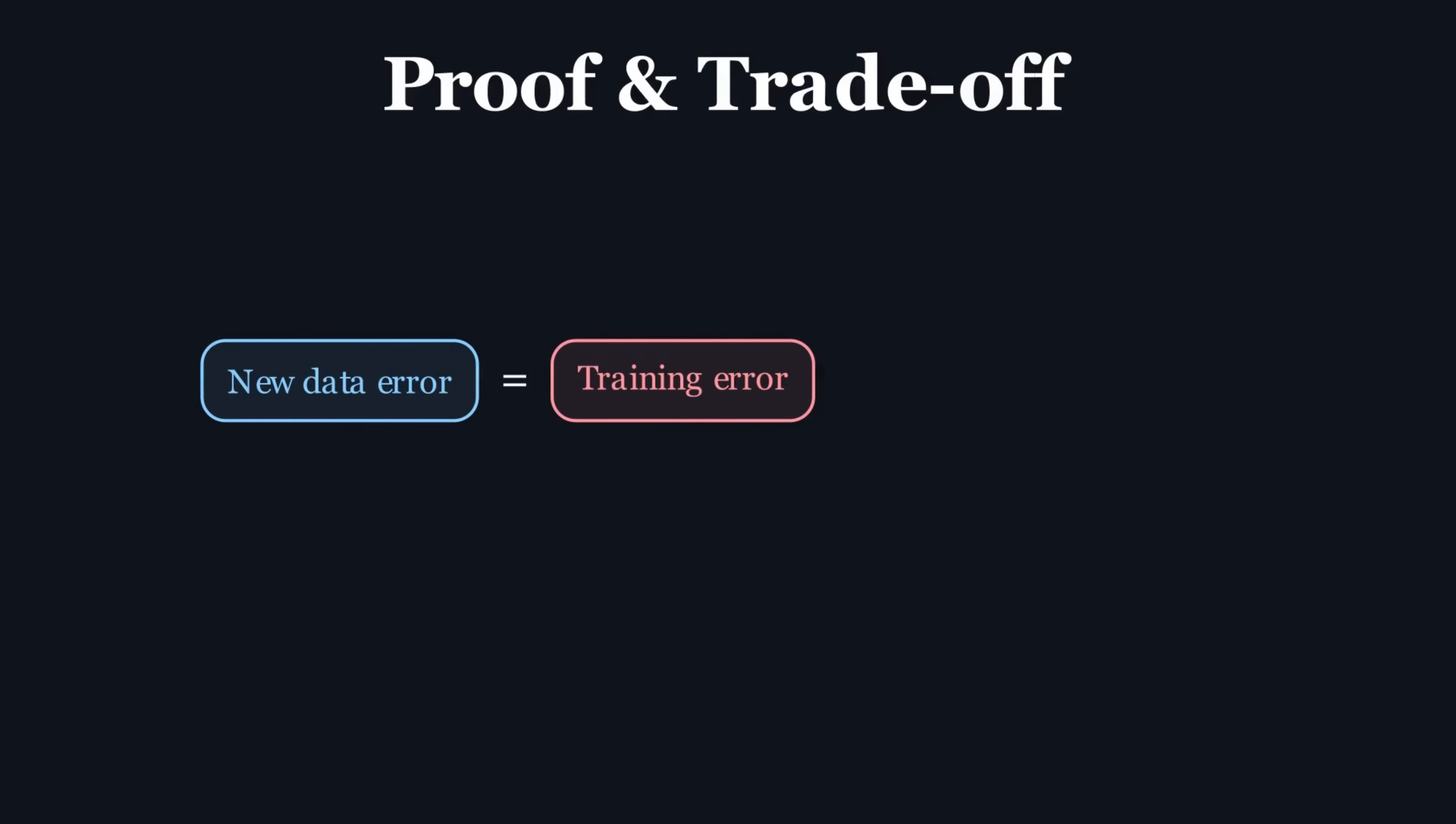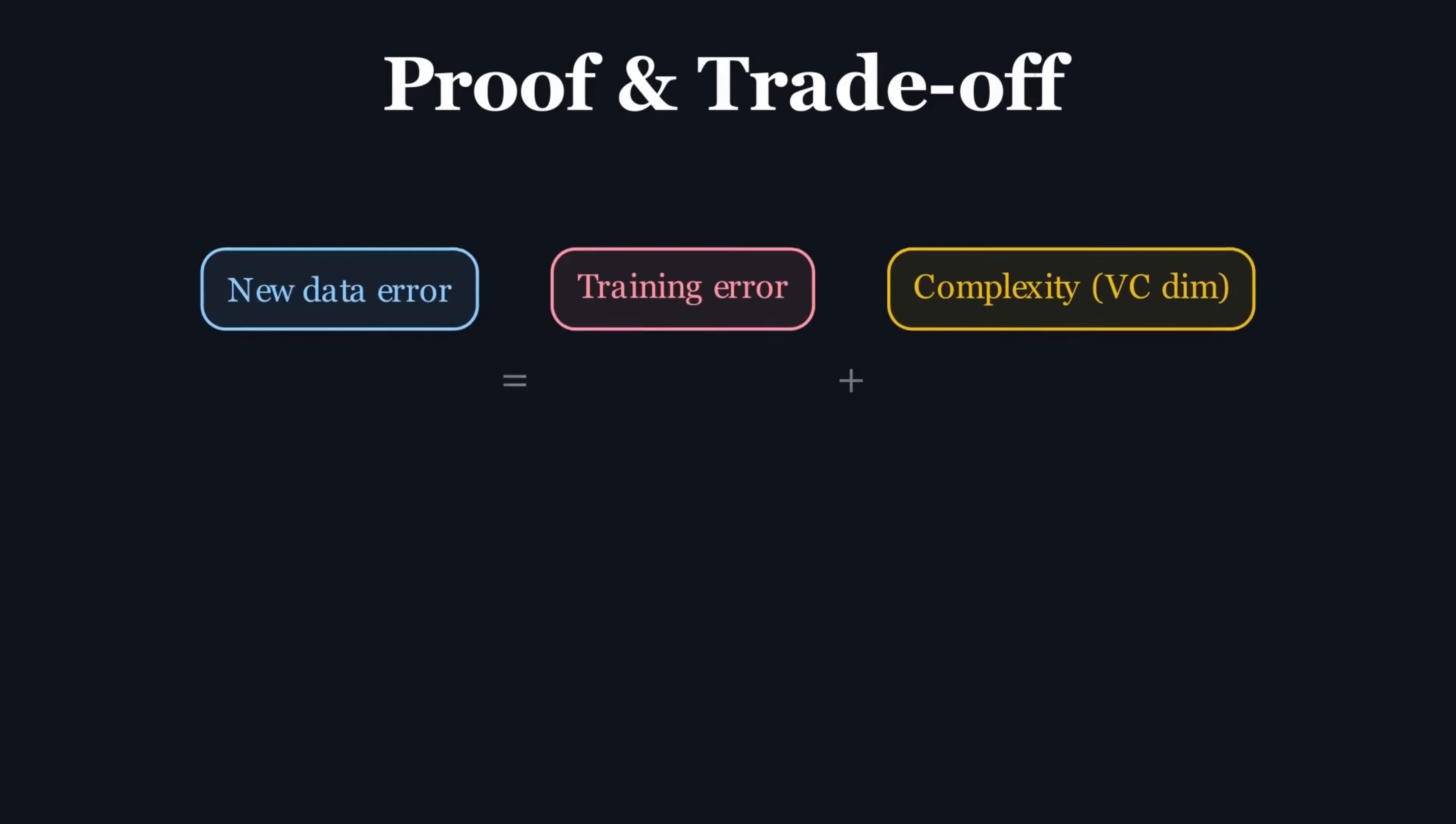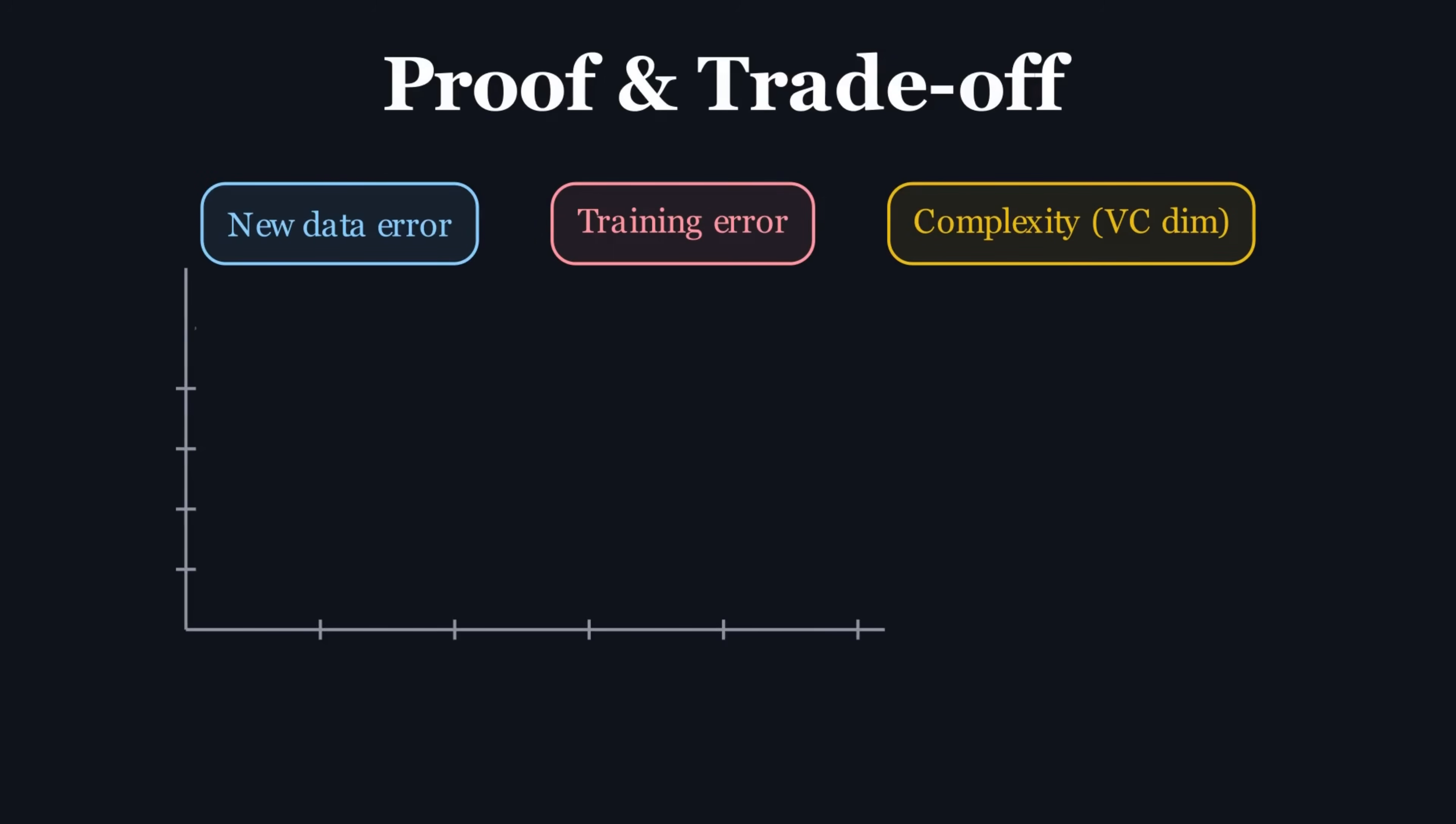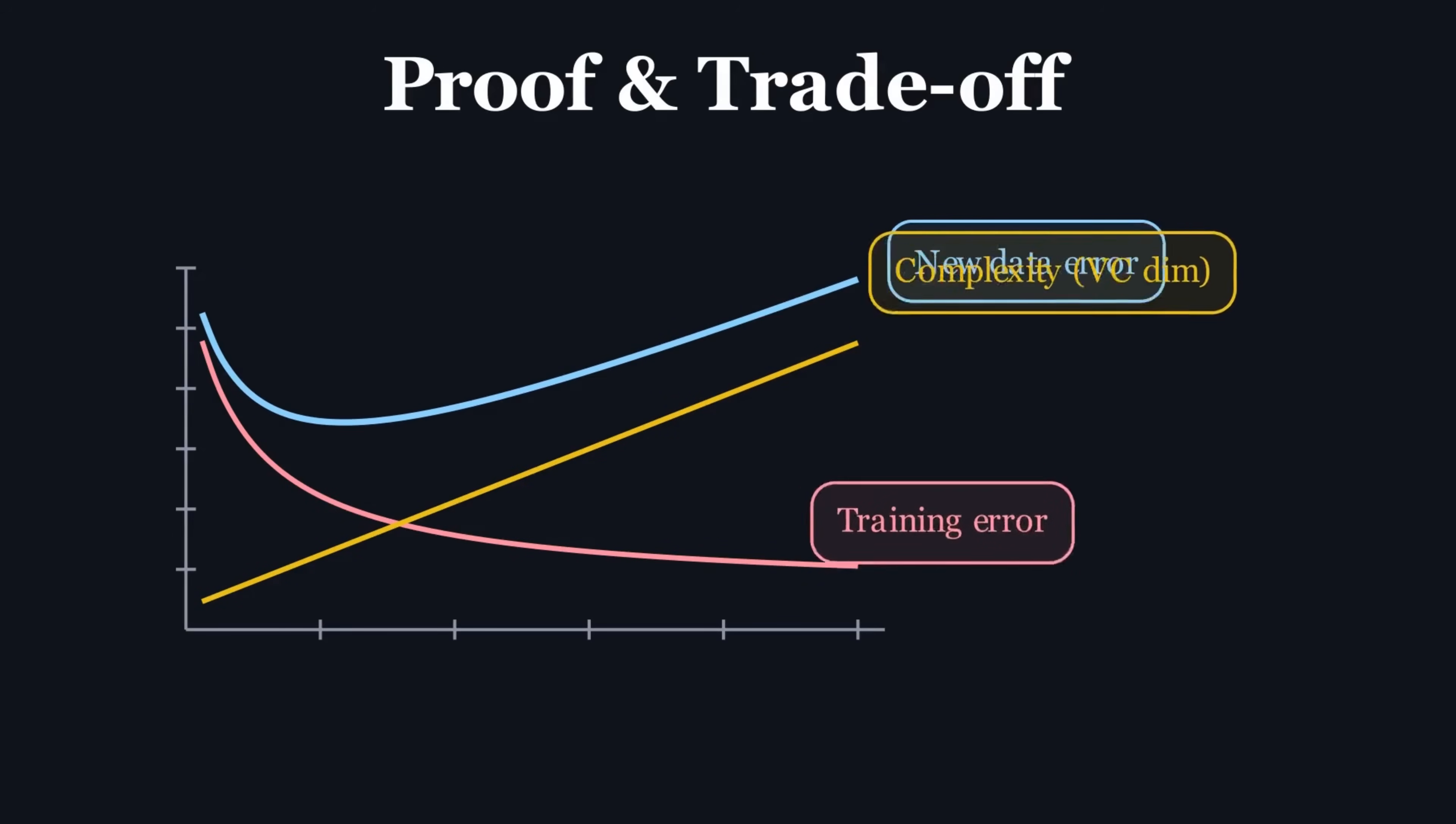It says that the error a model will make on new, unseen data is less than or equal to the error it made on the training data, plus a penalty term that depends on the model's complexity, its VC dimension. This is profound. It's a mathematical trade-off.